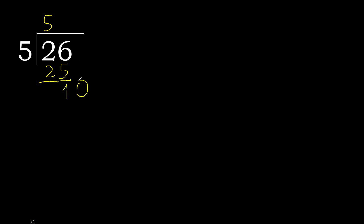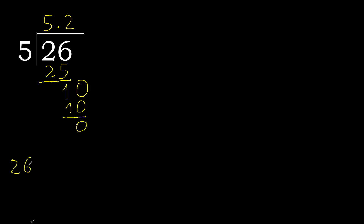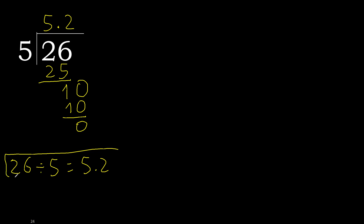Next, there is no next number, therefore complete. Always complete with 0 — here with a point. 0 point 10. 5 multiplied by 2 is 10. 10 minus 10 is 0. Therefore 26 divided by 5 is finished — the answer is 5.2.